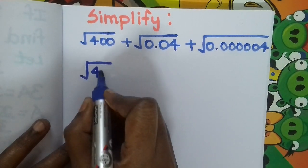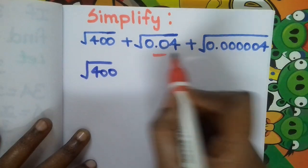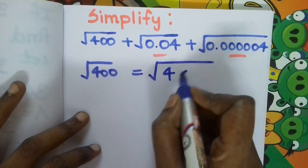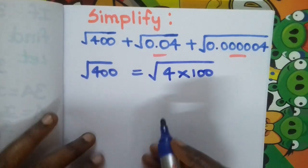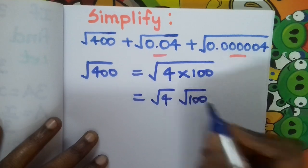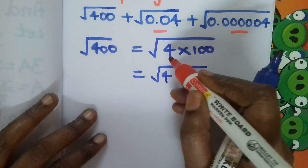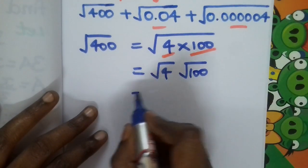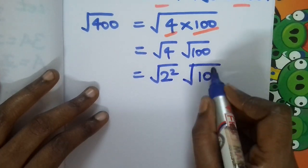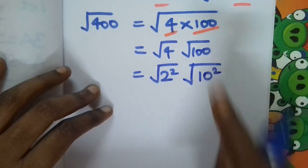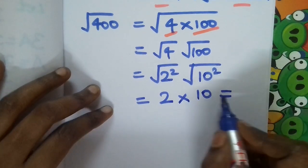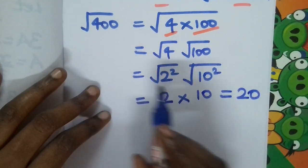First, solve root 400. This can be written as root of 4 into 100, because 4 into 100 is 400. So root 4 into root 100 — multiplication is applicable for both. Root 4 is 2 squared, root 100 is 10 squared. So root of 2 squared is 2, into root of 10 squared is 10. So 2 into 10 is 20. Root 400 is 20.